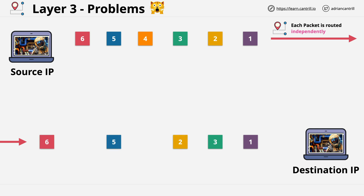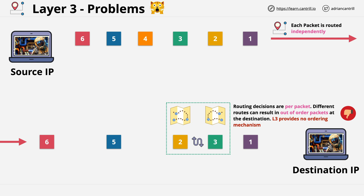One of the first things we might encounter is out-of-order arrival — for example, packet 3 arriving before packet 2. Layer 3, specifically IP, provides no method to ensure the ordering of packet arrival. For applications which only used IP, complex logic would need to be built into the application to ensure packets could be sequenced correctly, and this is not a trivial task. Because each packet is routed as an independent thing, packet 2 could have taken a slower, less efficient route, which is why it arrives later.